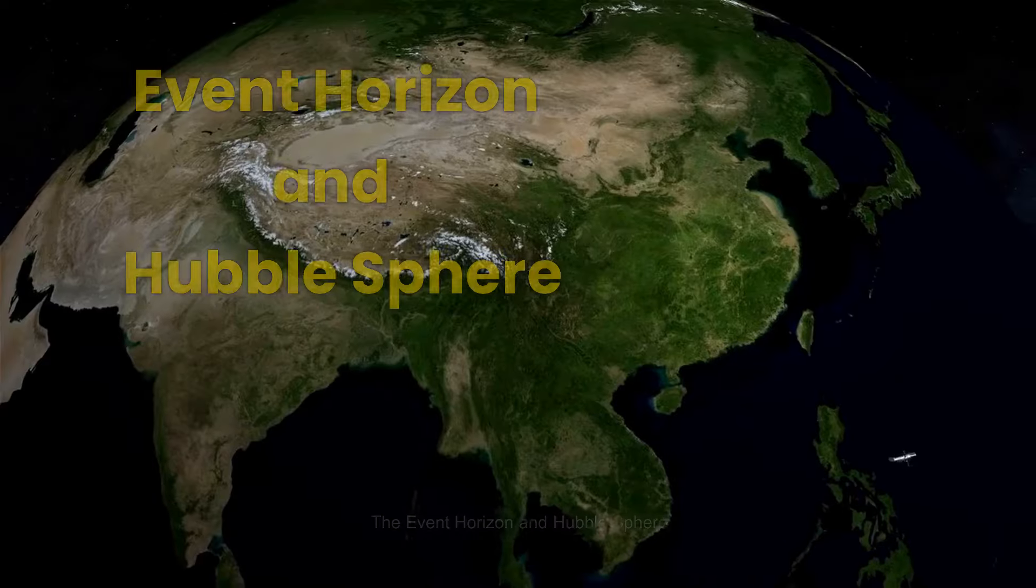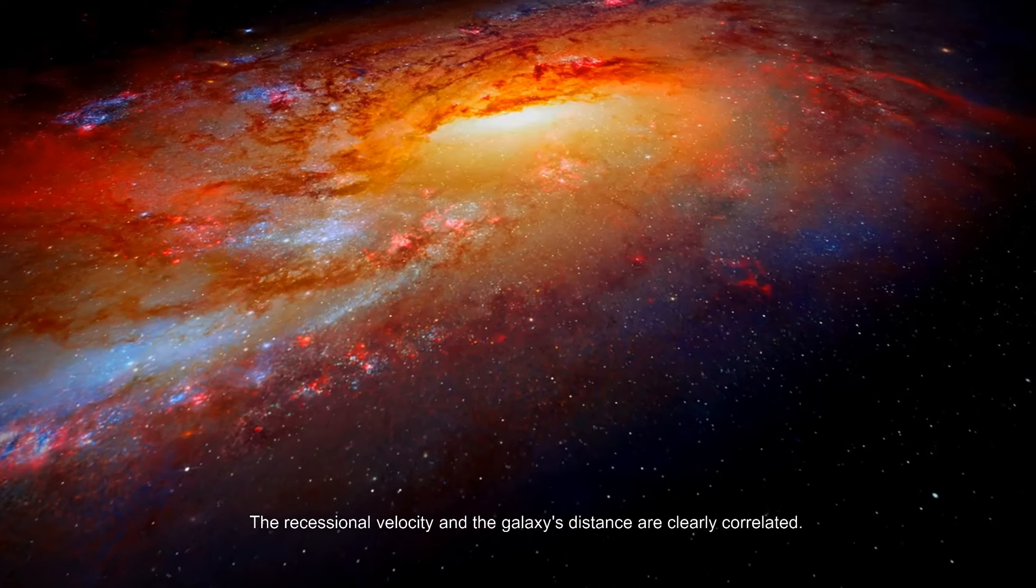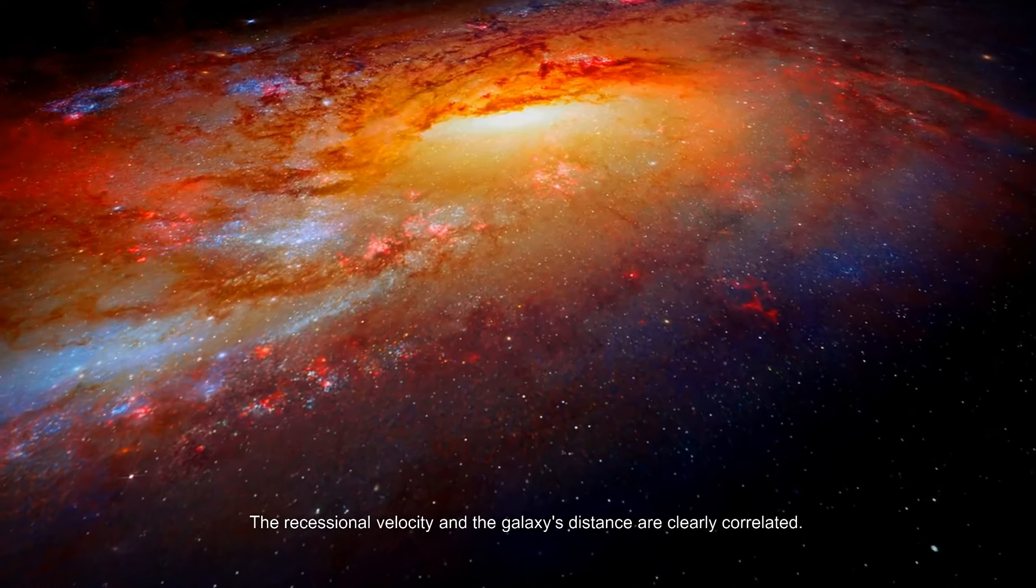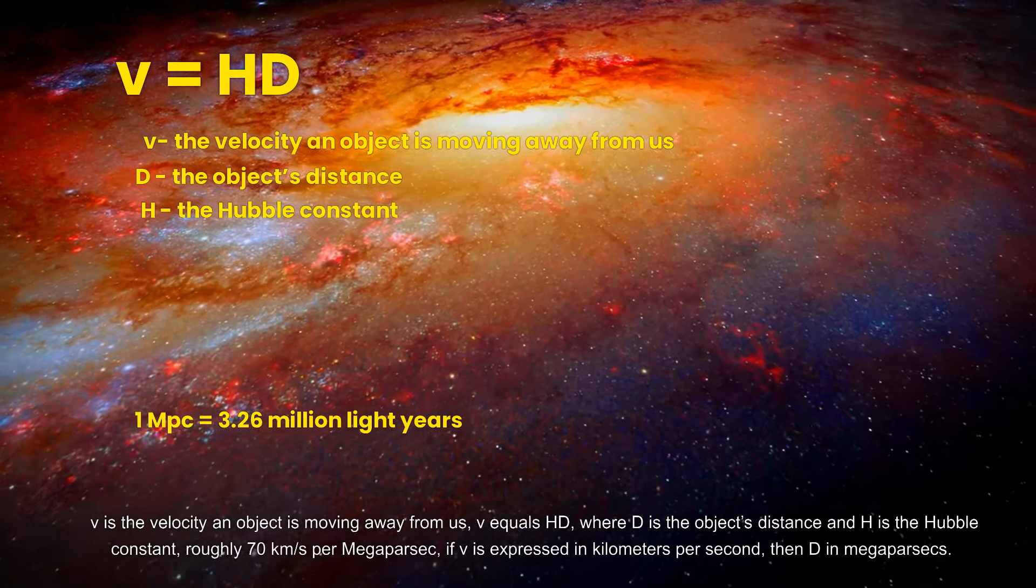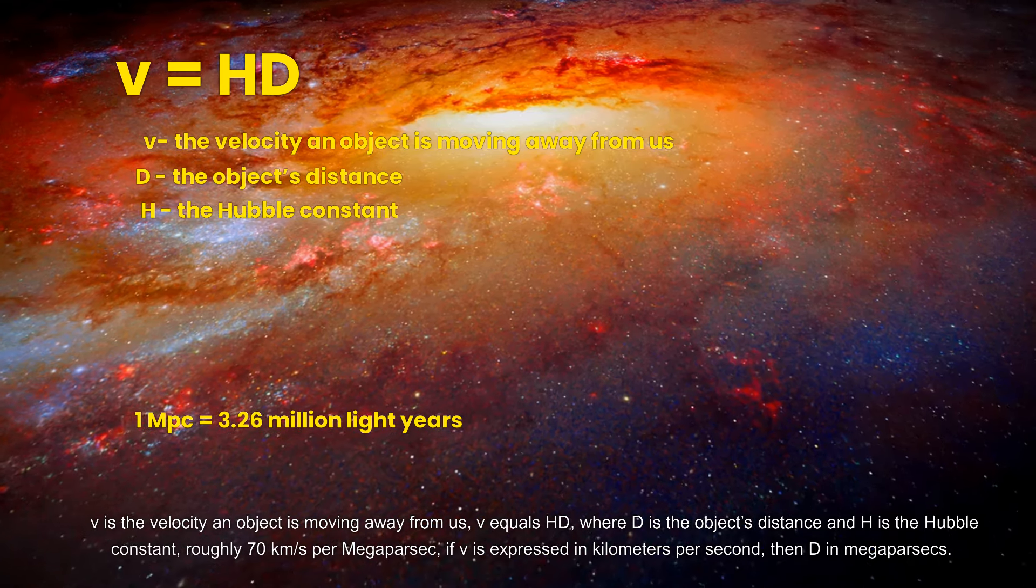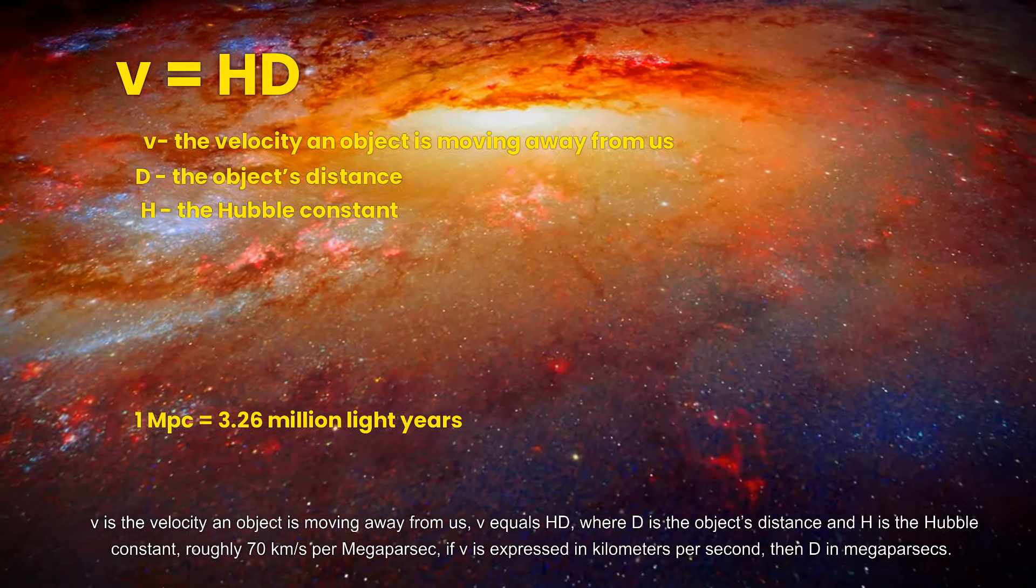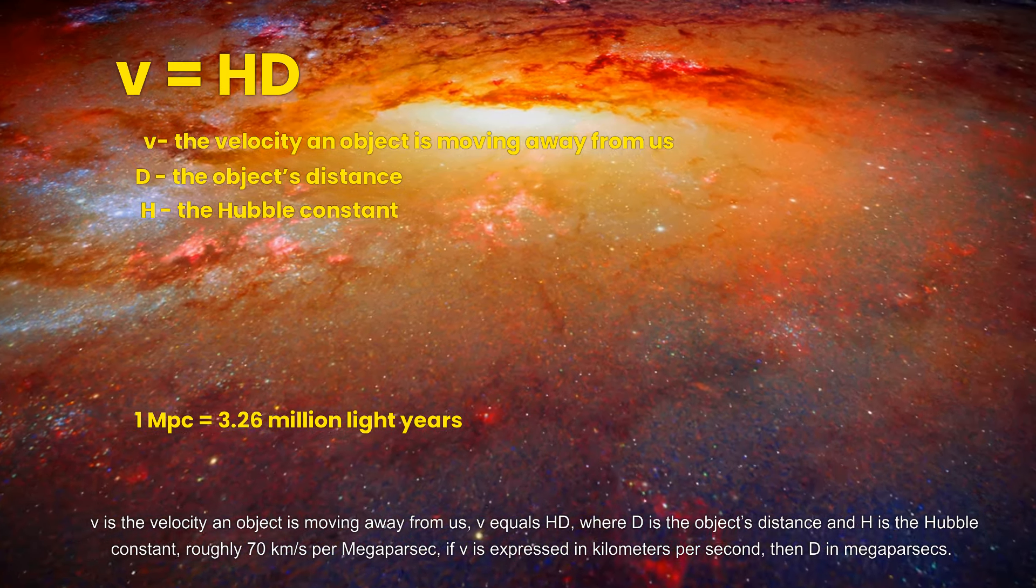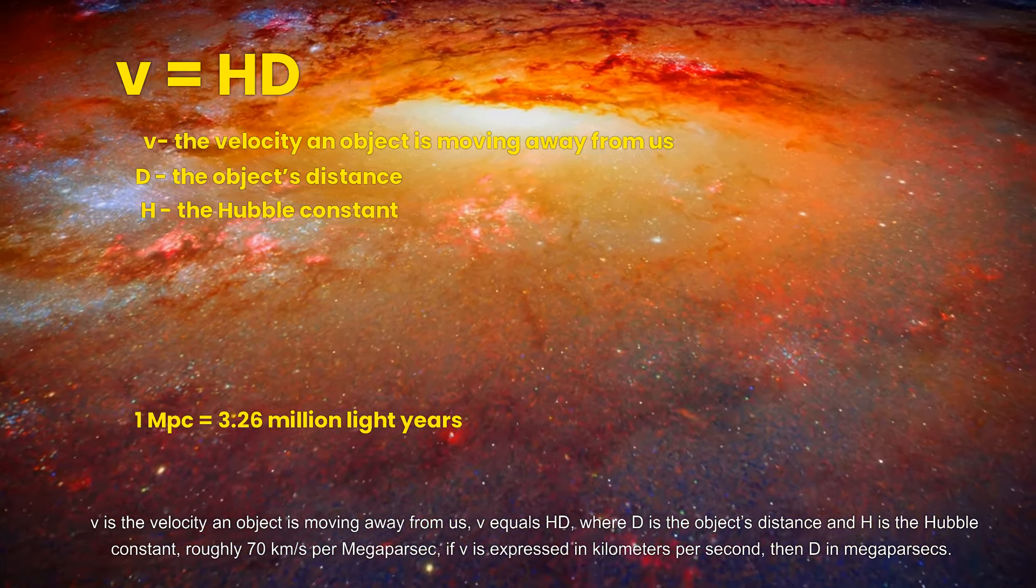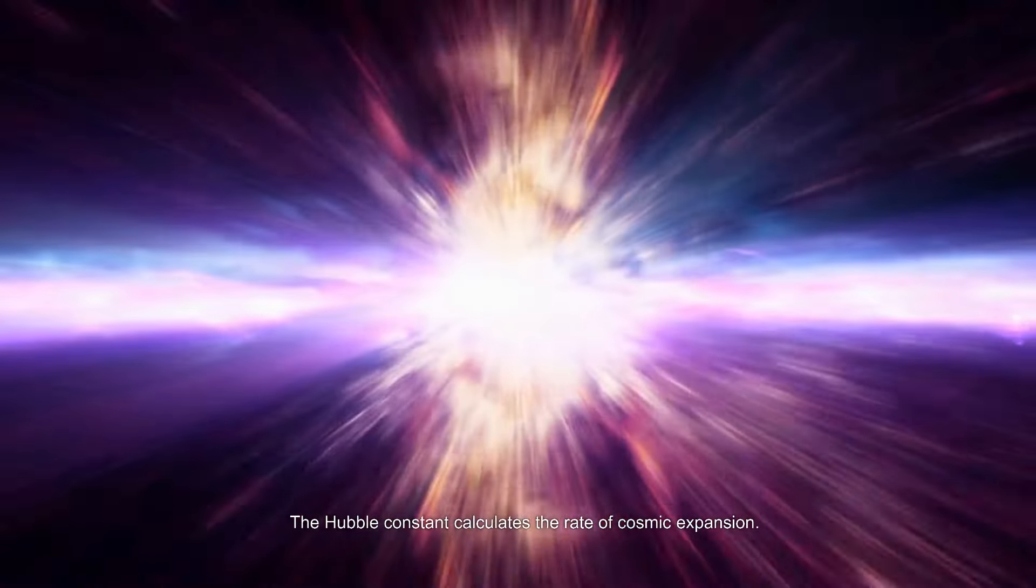The event horizon and Hubble sphere: the recessional velocity and the galaxy's distance are clearly correlated. v = HD, where v is the velocity an object is moving away from us, D is the object's distance, and H is the Hubble constant—roughly 70 kilometers per second per megaparsec. If v is expressed in kilometers per second, then D in megaparsecs. The Hubble constant calculates the rate of cosmic expansion.